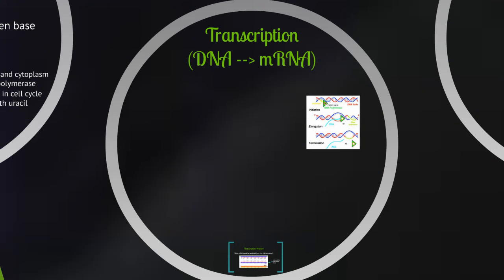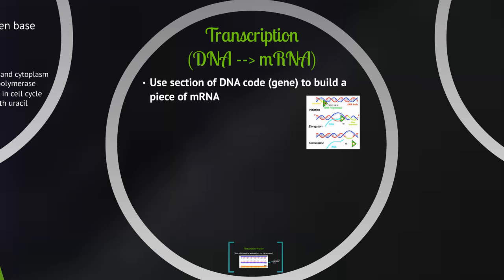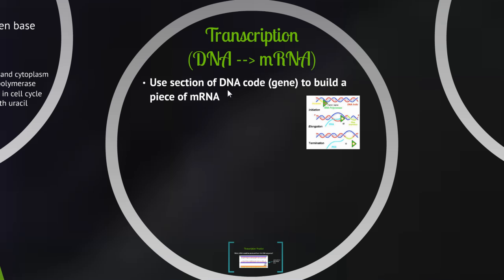Let's look at the details of transcription and how we use a section of the DNA code — that individual section is called the gene — to build a piece of messenger RNA. Remember in our analogy we're using a single recipe and making a photocopy of it so that it can go be used in the kitchen.